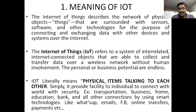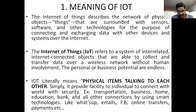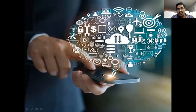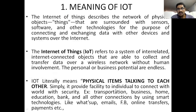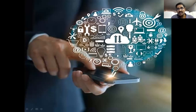IoT literally means physical items talking to each other. It provides a facility for individuals to connect with the world with security. If you have a smartphone with smart apps, it is a facility to connect with the world — with markets, computer software, employment, career groups, and banking systems. You are connected with the world by using this smartphone and these smart apps. These smart apps are called IoT applications.